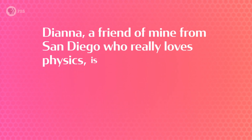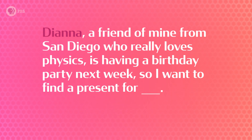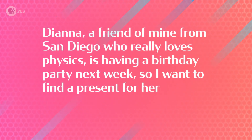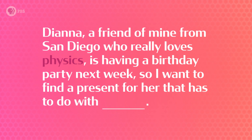Let's try a harder example: "Diana, a friend of mine from San Diego who really loves physics, is having a birthday party next week. So I want to find a present for blank." When I read this sentence, my brain identifies and remembers two things: first, that we're talking about Diana from 27 words ago, and second, that my friend Diana uses the pronoun her. That means we want our encoder to build a representation that captures all these pieces of information from the sentence, so that the decoder can choose the right word for that blank.